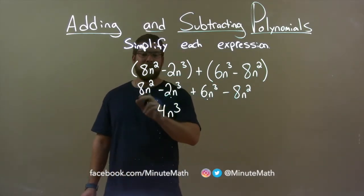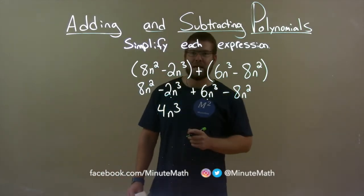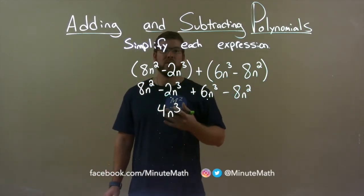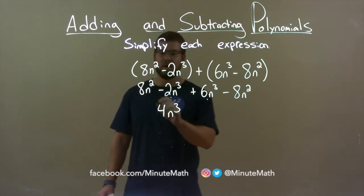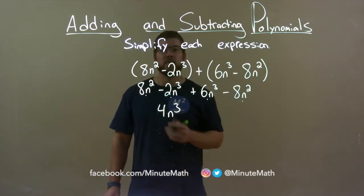Next highest degree is squared. We have an 8n squared minus 8n squared. And we know that cancels out. That's going to be a zero, right? 8n squared minus 8n squared is zero. Don't need to write a zero down.